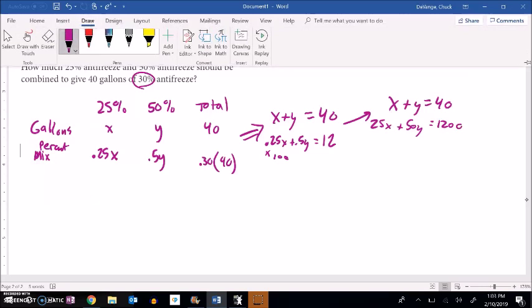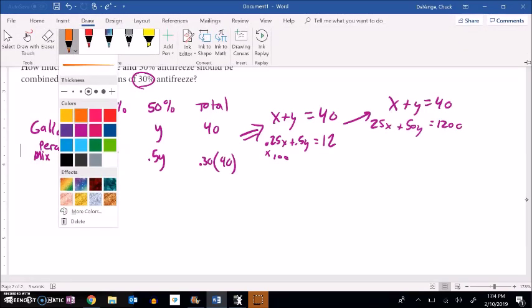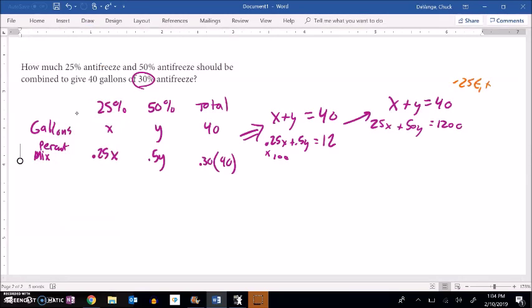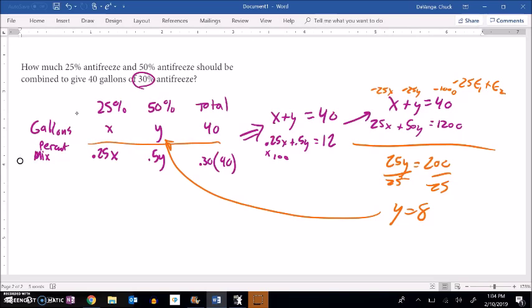And then now to solve this one, I think what I'm going to do is multiply this one by negative 25, because that will cancel out my x's. So multiply this by negative 25, negative 25x, negative 25y. 40 times negative 25 is negative 1,000. So now I add them together. X's cancel. Y's become 25y. And negative 1,000 plus 1,200 is 200. Divide by 25. It looks like y is 8. And if y is 8, and plug it back in here, looks like x must be 32.